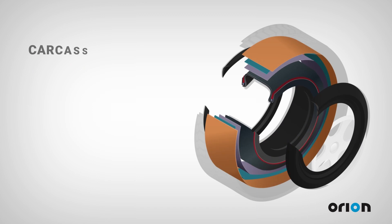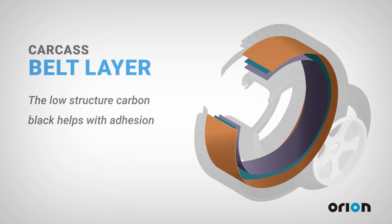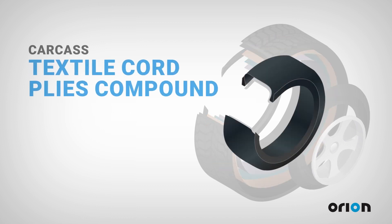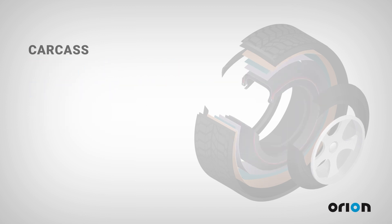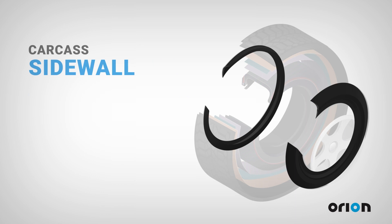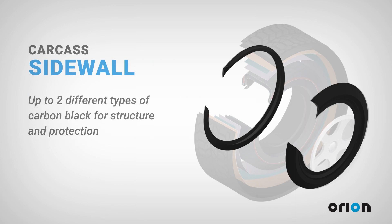Next, there is the carcass, which is made up of several parts. The belt layer helps the tire maintain a stable shape. The low structure carbon black helps the adhesion of the steel to the compound, which is a critical safety issue. The textile cord plies compound contains one or two types of carbon black, which fine tune the handling and comfort of the tire. The side wall shields the tire from damage and environmental factors, using up to two different types of carbon black to provide structure and protection.